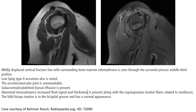The subacromial, subdeltoid bursa should not be distended. Abnormal intrasubstance increased signal and thickening is present along the supraspinatus tendon fibres, consistent with tendinosis.